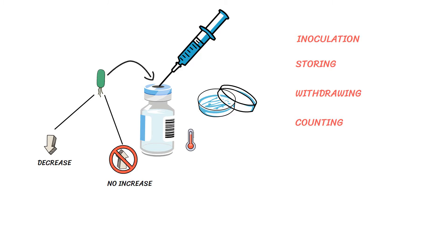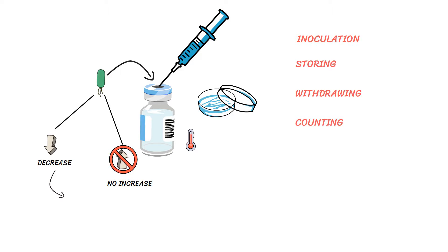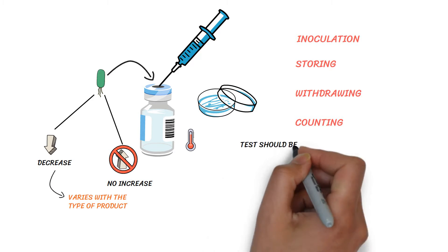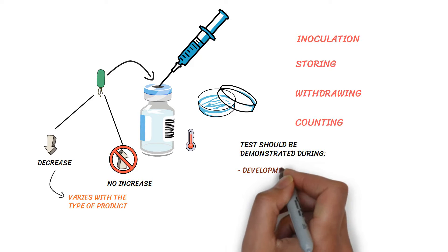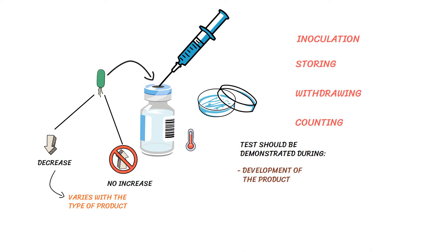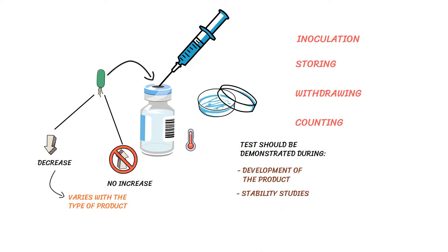The acceptance criteria in terms of decrease in microbial population varies with the type of product. The test should be demonstrated during the development of the product to determine the effectiveness, and during the stability studies to determine that the effectiveness is stable over time.